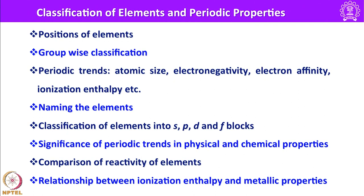Once we have established all these facts about the elements, we can also understand the relationship between ionization enthalpy and metallic properties. Most of these terms — atomic size, electronegativity, electron affinity and ionization enthalpy — are all interrelated, and we can use them as tools to understand the entire set of elements in the periodic table.